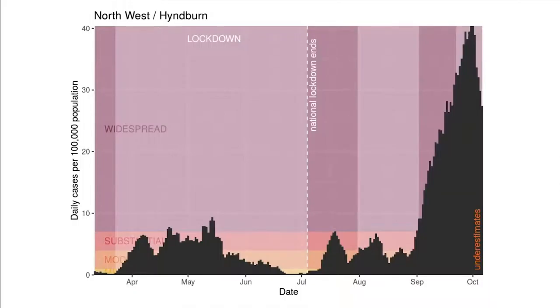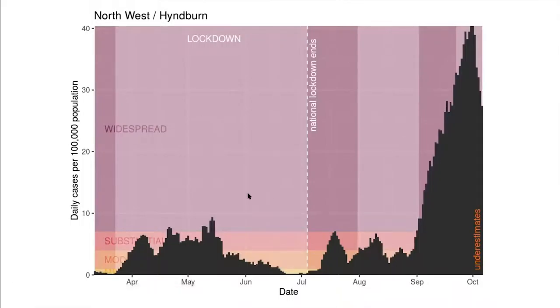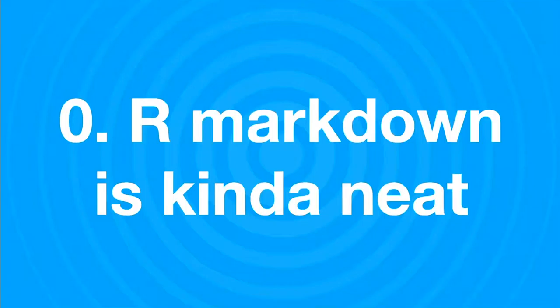I currently have a running thing on London because people are worried about London, even though there are lots of other places they should be more worried about. The graphs themselves look something like this — using the color scheme Stuart mentioned, which gives it a nice sunset feel over cliffs. This example highlights the times when there are lockdowns, showing places going into lockdown, coming out of lockdown, and going into lockdown again, with white areas to illustrate when those lockdowns happen. It also communicates that some of these numbers are underestimates, particularly the data on the very right-hand side.